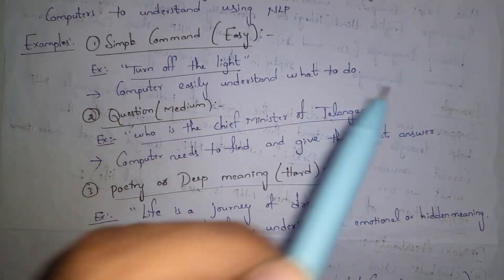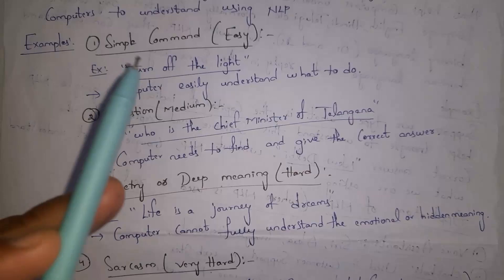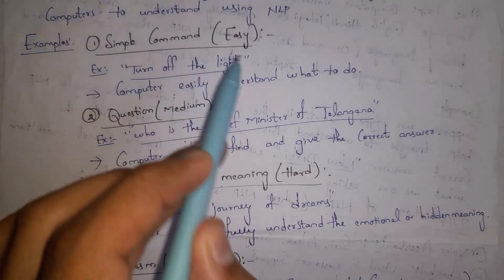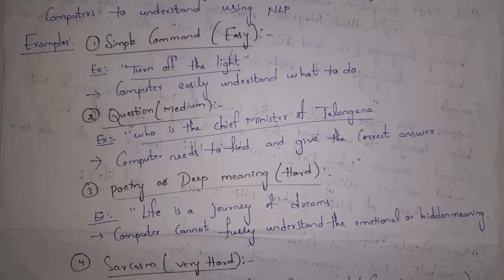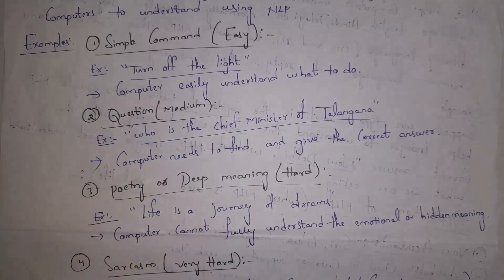The first level is easy. We use a simple command like 'turn off the light'. The computer does not need to find any answer; it simply understands the sentence and turns off the light. The second level is medium. When we give a question to the computer, it needs to understand that question and then search for the answer. For example, searching 'who is the chief minister of Telangana' in Google — Google will take some time, search for the answer, and then give us the correct answer.